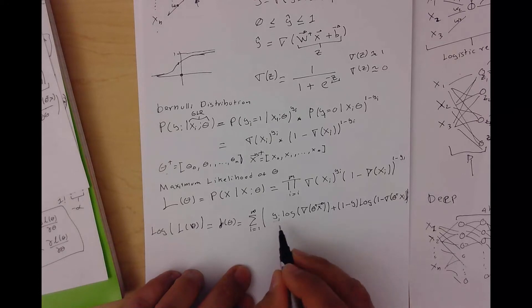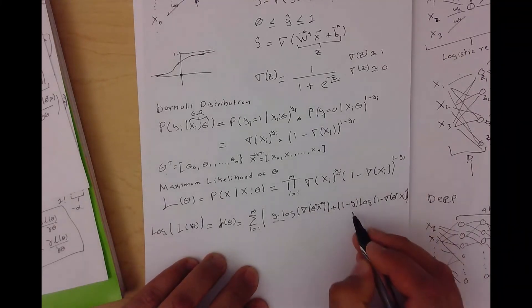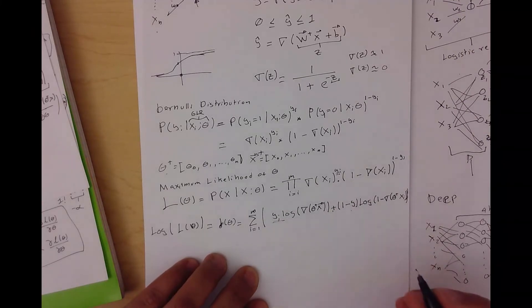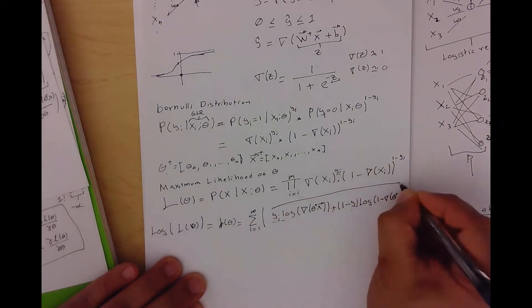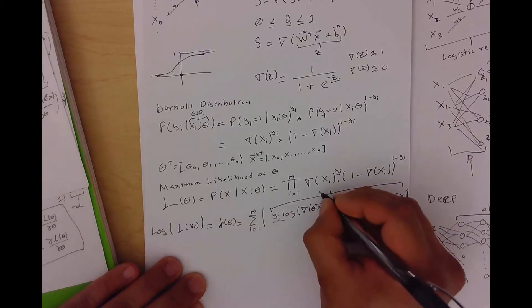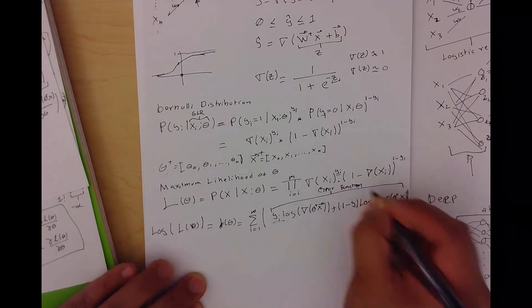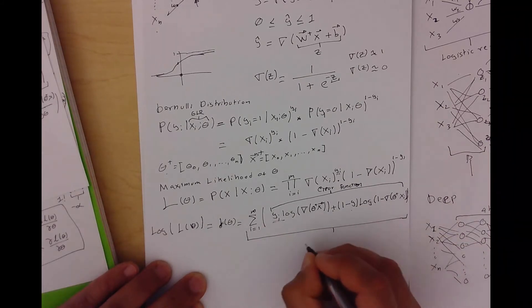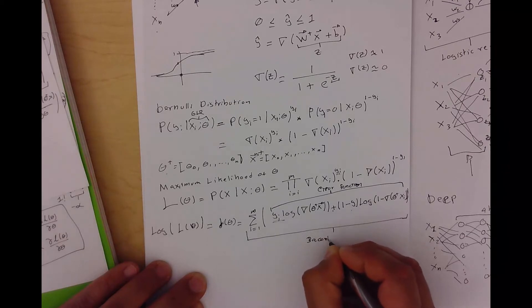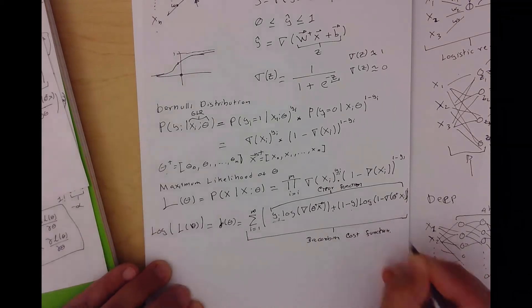The exponent comes down due to logarithm properties, and the multiplication becomes addition. The inner part is called the error function. The full expression including the summation is called the Jacobian cost function. For maximum likelihood, we take the derivative of this and set it equal to zero.